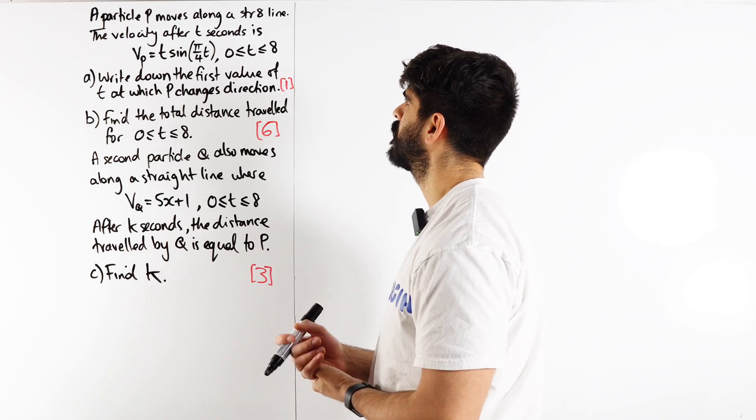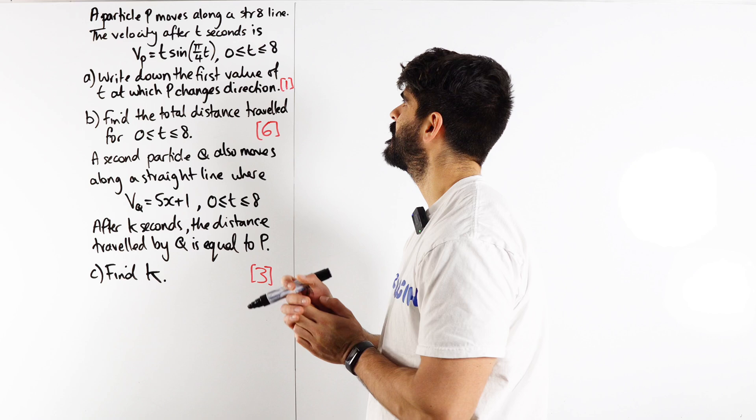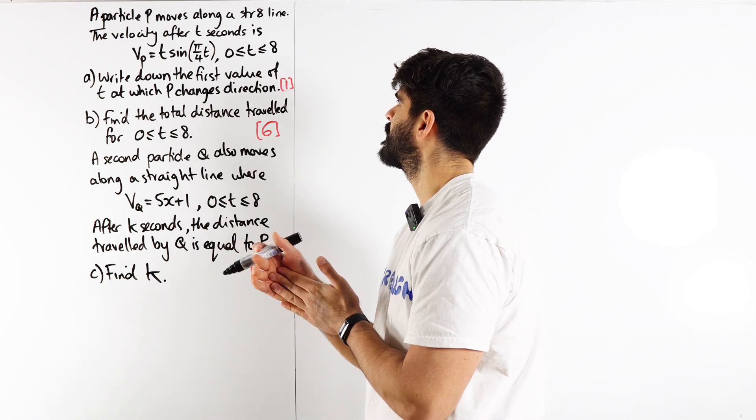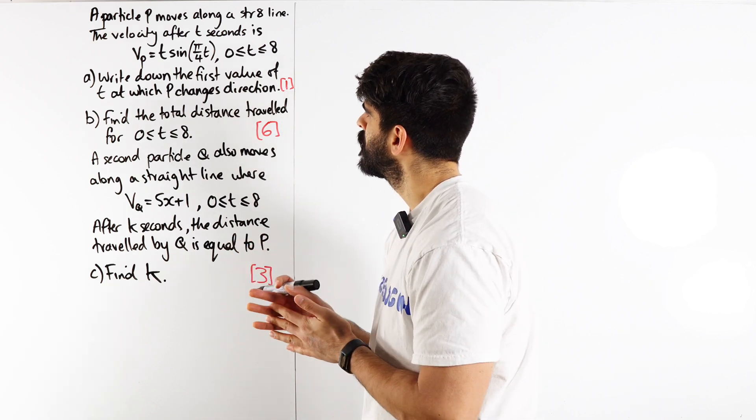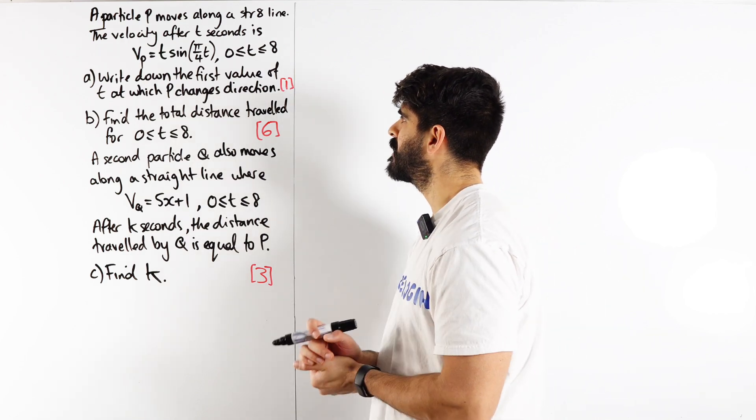A particle P moves along a straight line. The velocity after t seconds is v = t sin(π/4 t), where t is between 0 and 8. Write down the first value of t at which P changes direction.